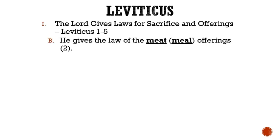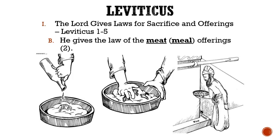Letter B: He gives the law of the meat or meal offerings. This offering was to be with fine flour and oil and frankincense added to it, and it was to be burnt upon the altar by the door of the tabernacle. The meal could be baked in an oven, on a pan, or even fried, but it had to be unleavened and without any honey. The remnant of this offering was to be for Aaron and his sons. Interestingly, this was the only sacrifice or offering that did not require an animal's death.